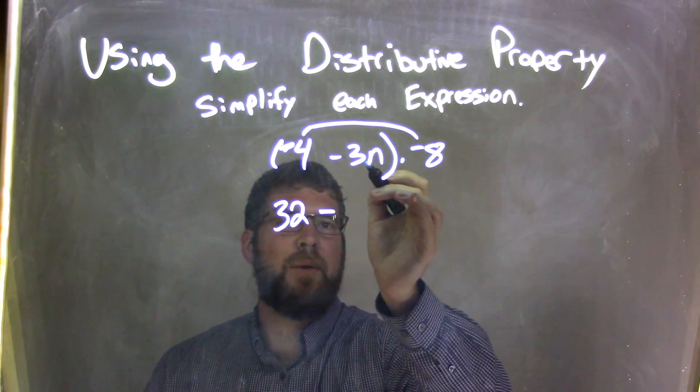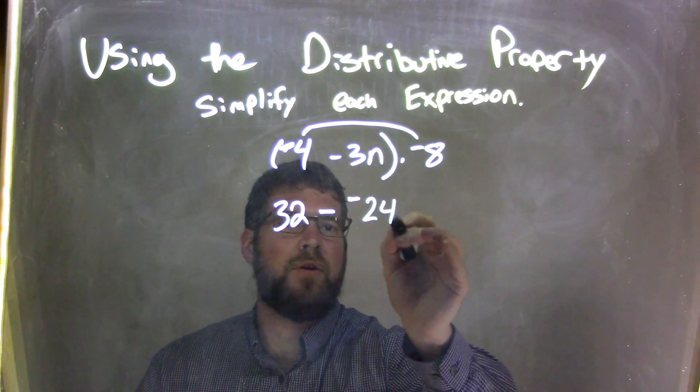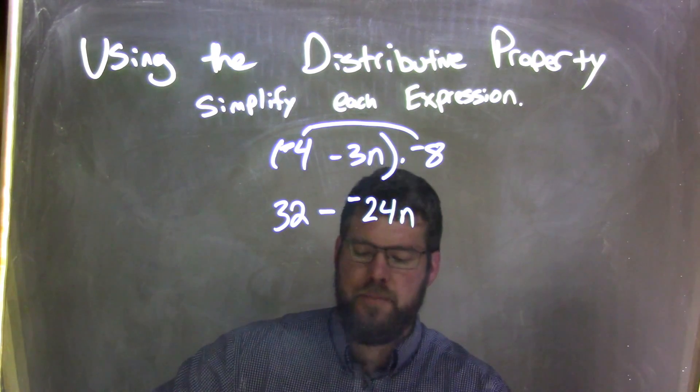Now I have negative 8 times 3n. Negative 8 times 3n is negative 24n. Now I have minus a negative here.